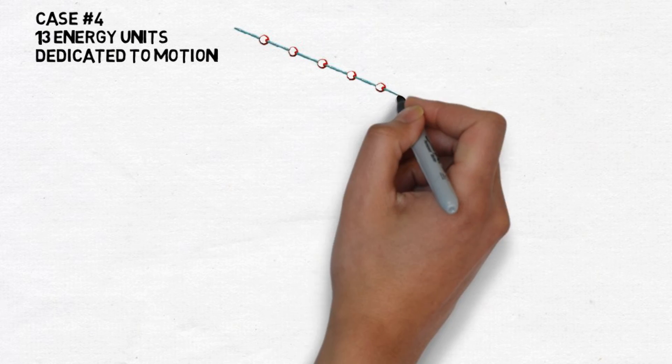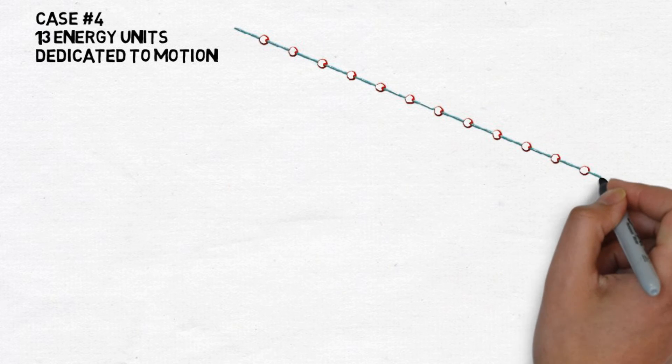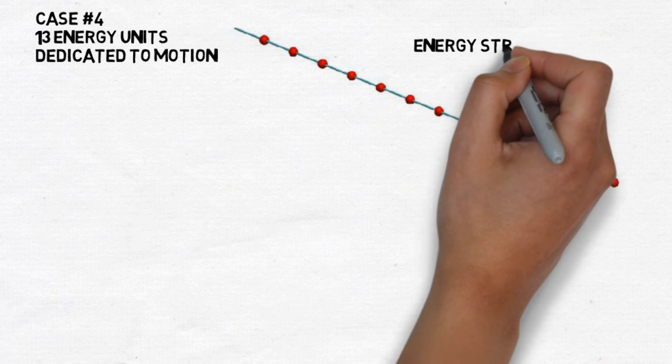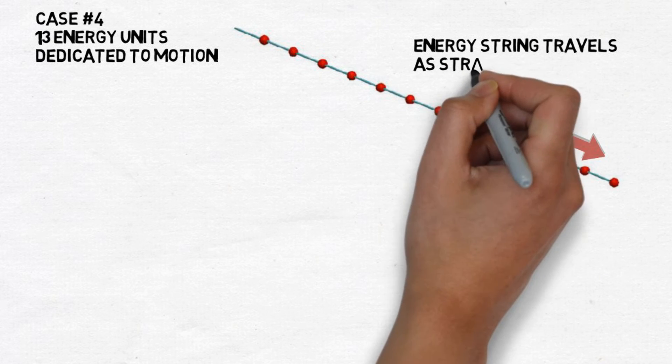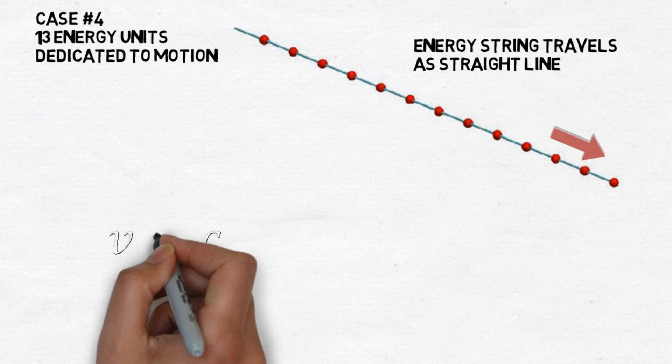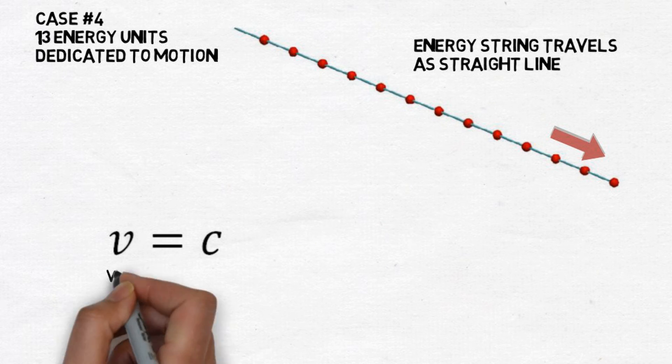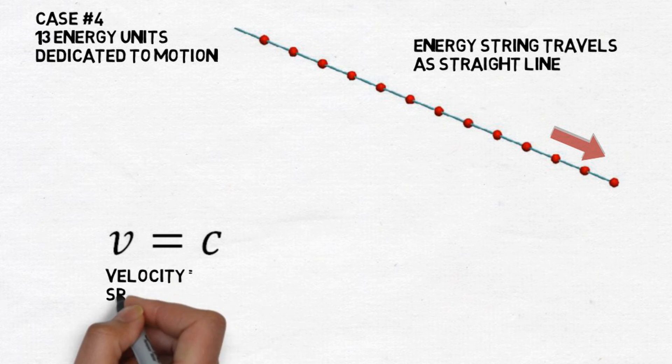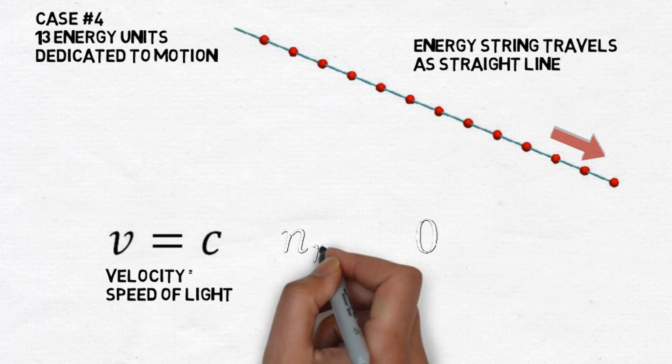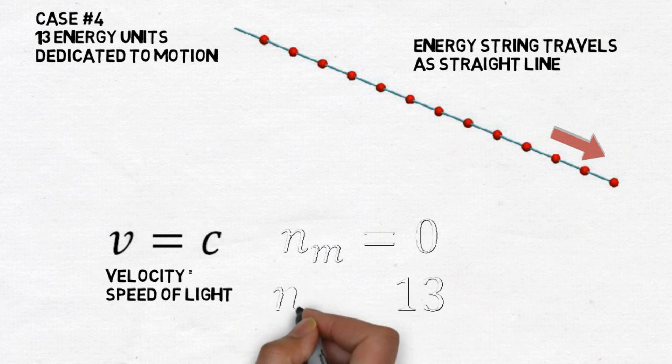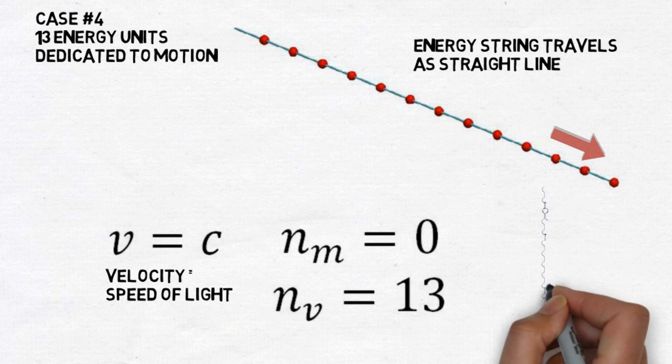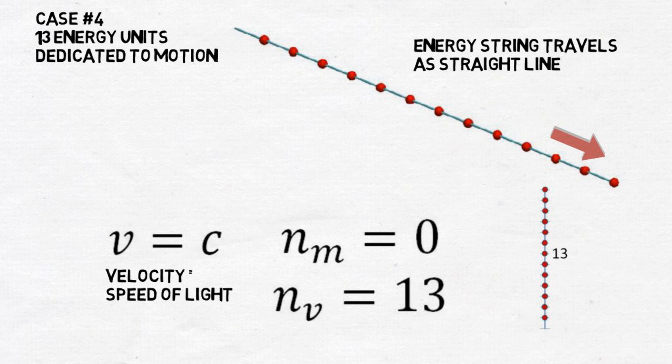Finally, in case 4, we dedicate all of our energy to motion and none to mass. This becomes our photon model. Our helix is now morphed into a straight line traveling at the speed of light. Our energy triangle has only one leg, leg b, with all 13 energy units being dedicated to it. This completes our model from a closed loop to a helix that elongates with added motion energy until it forms a straight line traveling at light speed.